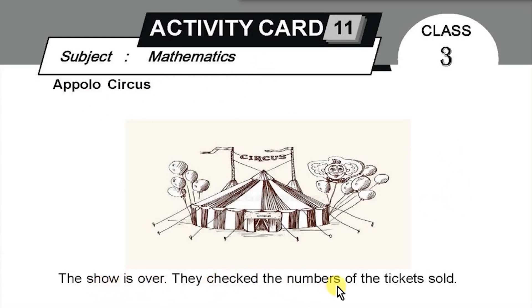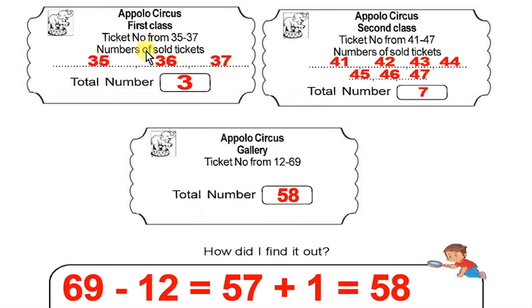They checked the numbers of the tickets sold. If you have to go to the circus, go to a show, then how many tickets are you going to check? These are tickets. First class ticket — ticket numbers from 35 to 37 are sold tickets. How many first class tickets? 35 to 37.